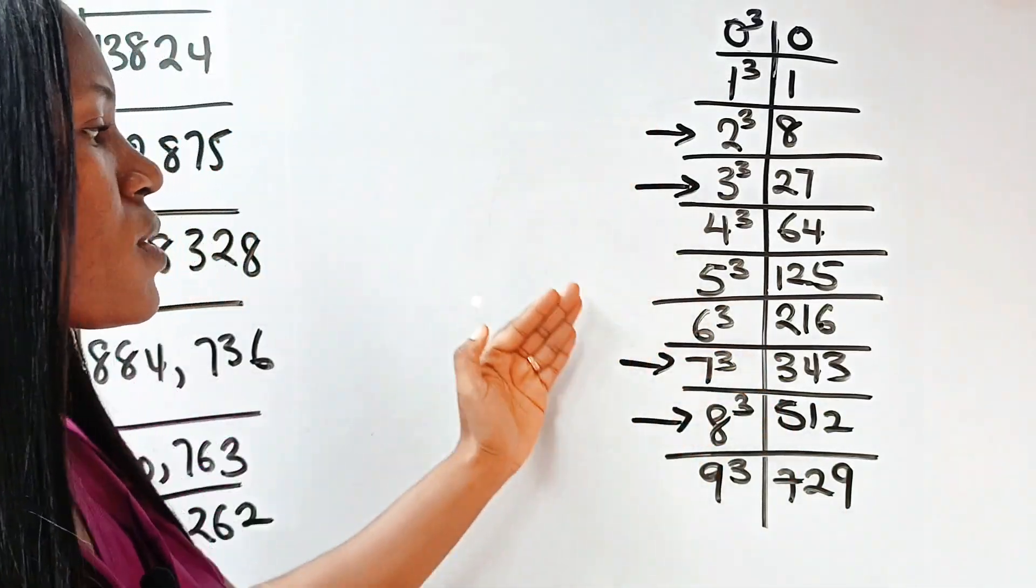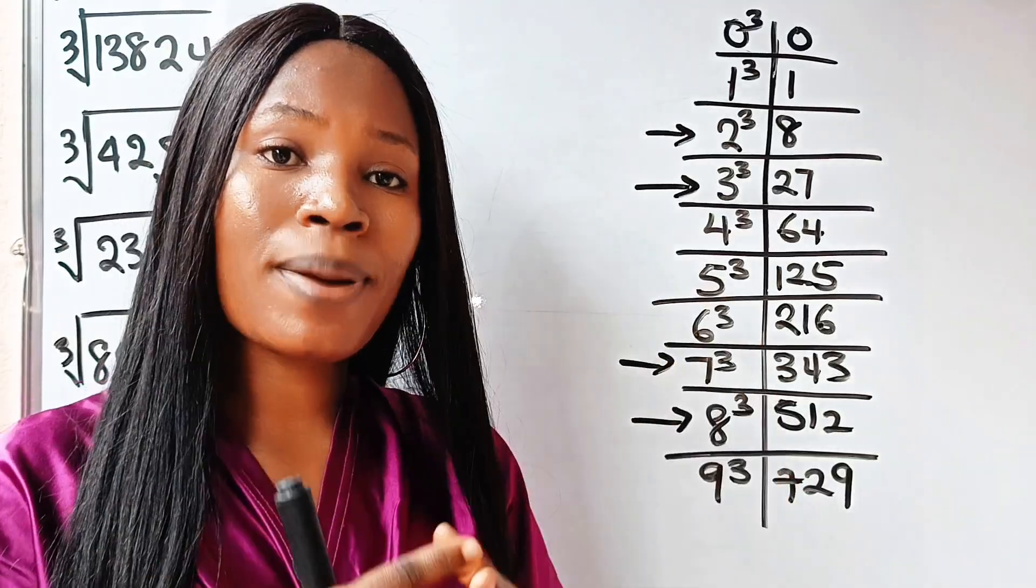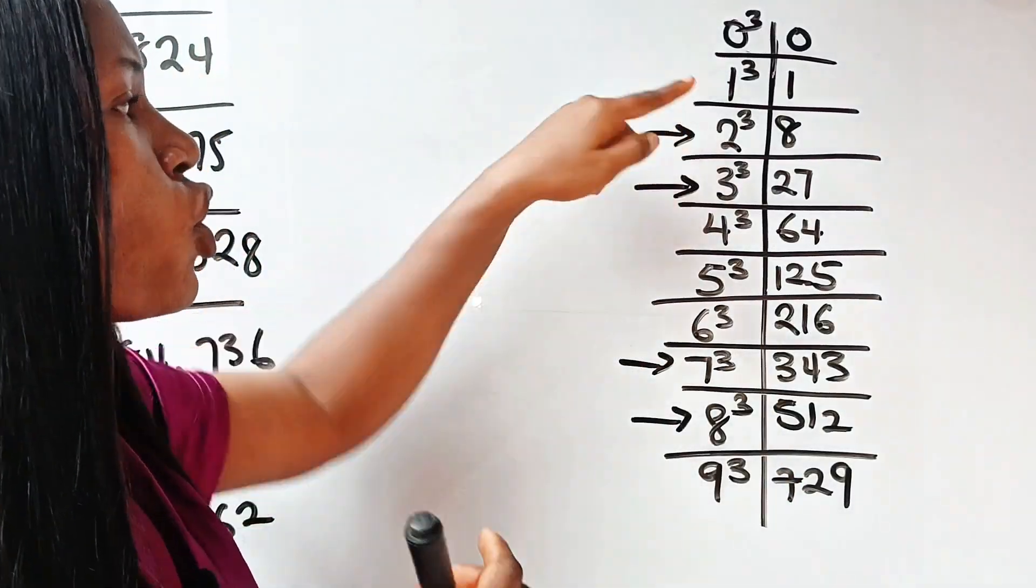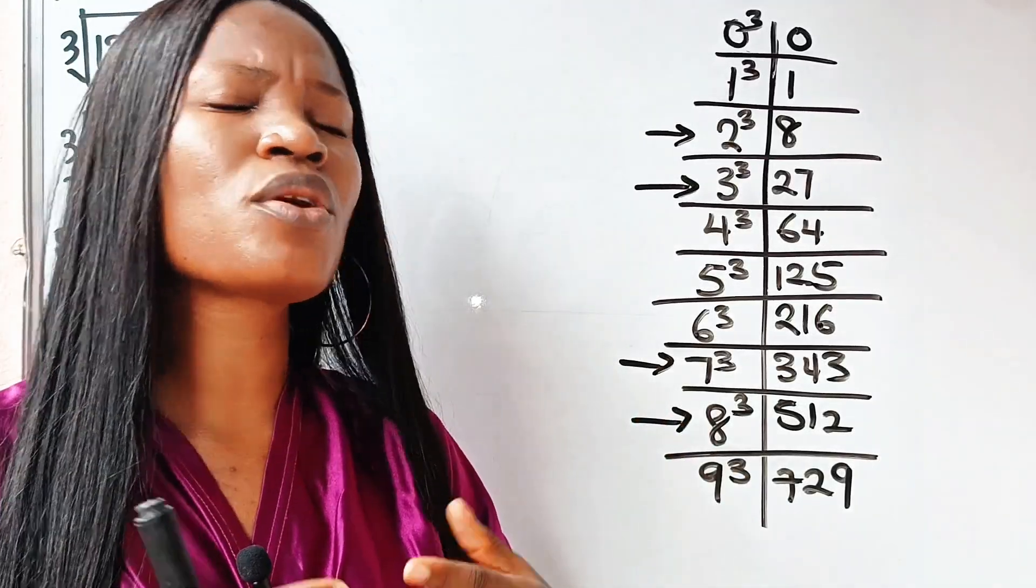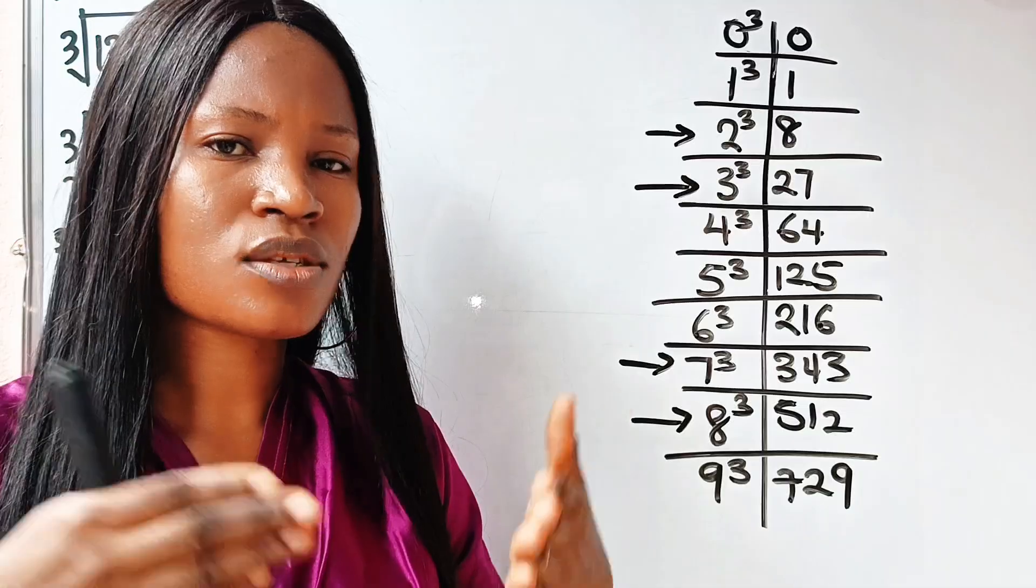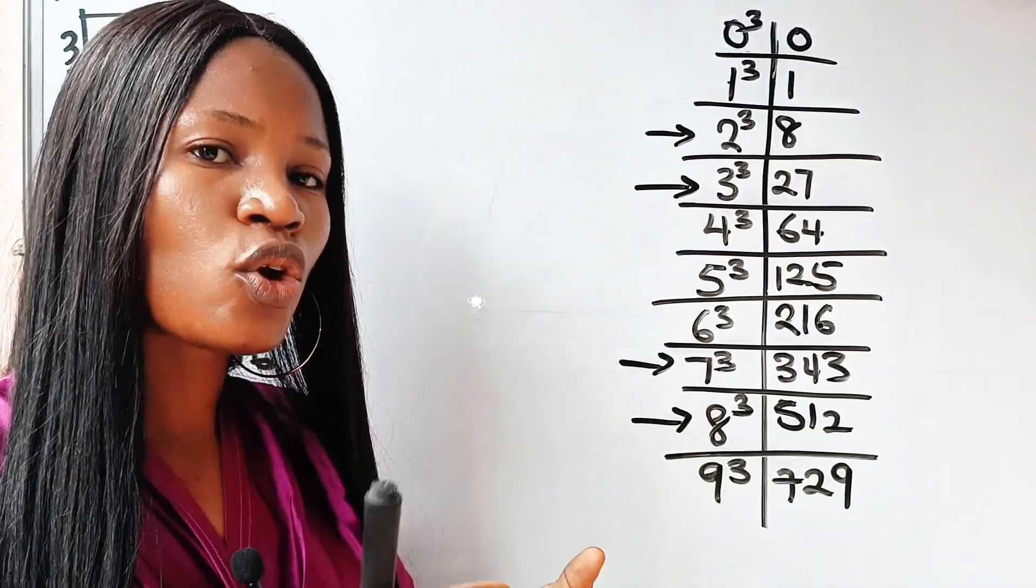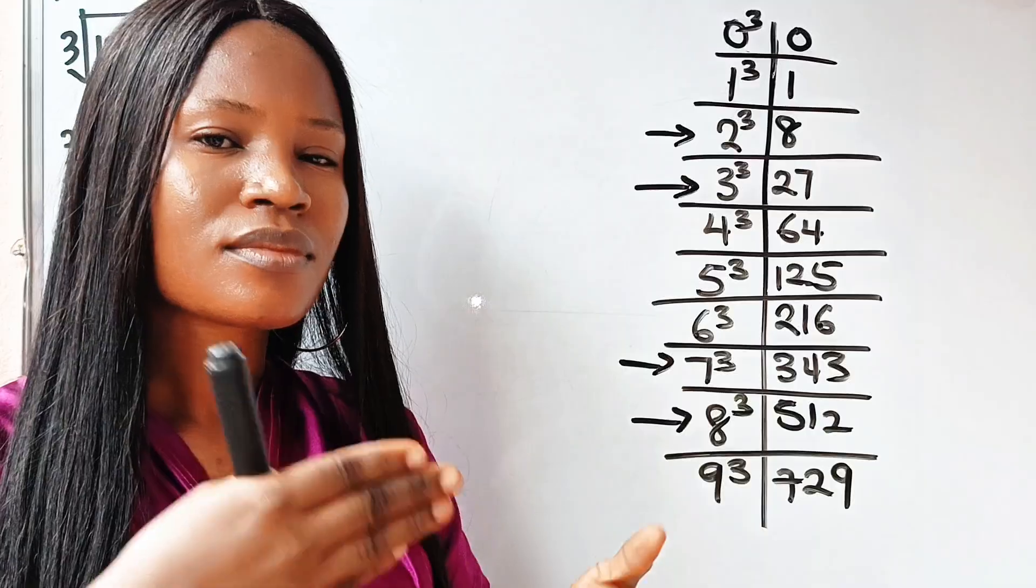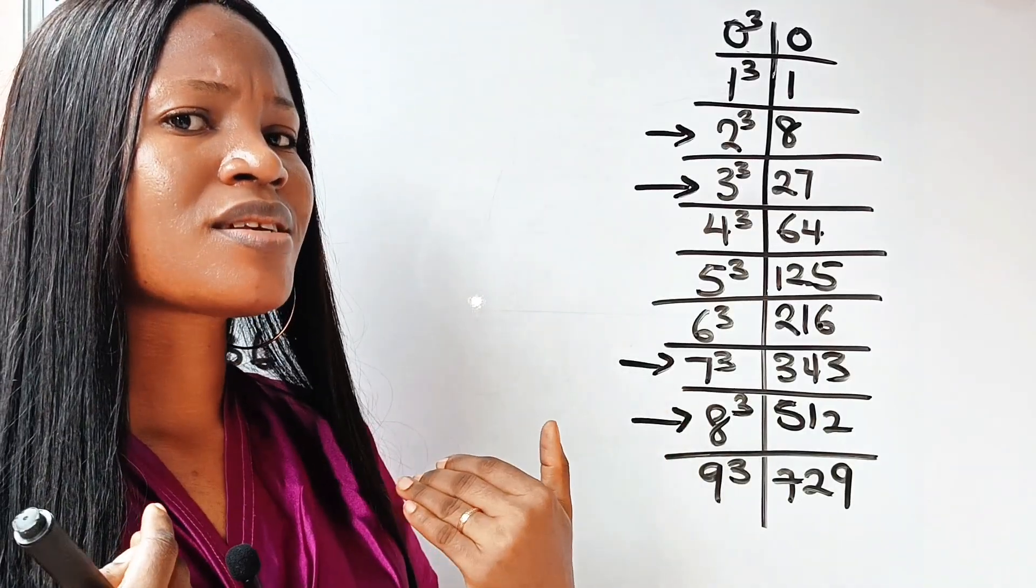Now, let us check these ones that are different. They also have something that will help you to remember them. Now, 2 cubed, what does 2 cubed end with? We already know that 2 cubed is 8. But assuming you don't know, what do you add to 2 to get 10? 8. So that is what it ends with. 2 cubed ends with 8. 3 cubed ends with 7. 3 plus 7, 10. Are you getting the logic now? That is how I memorize it.